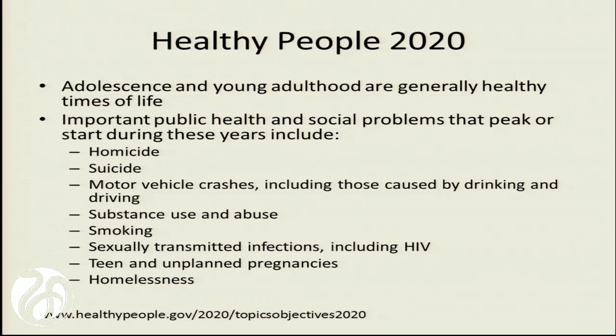Because we recognize that most adolescents are generally healthy, we still recognize that there are important health and social problems that peak or start during this time. For this reason, Healthy People 2020 developed a number of outcomes to look at specifically for young adults — this was actually added for the very first time in 2010, and many of you in this room were on panels to help develop what outcomes would be measured.